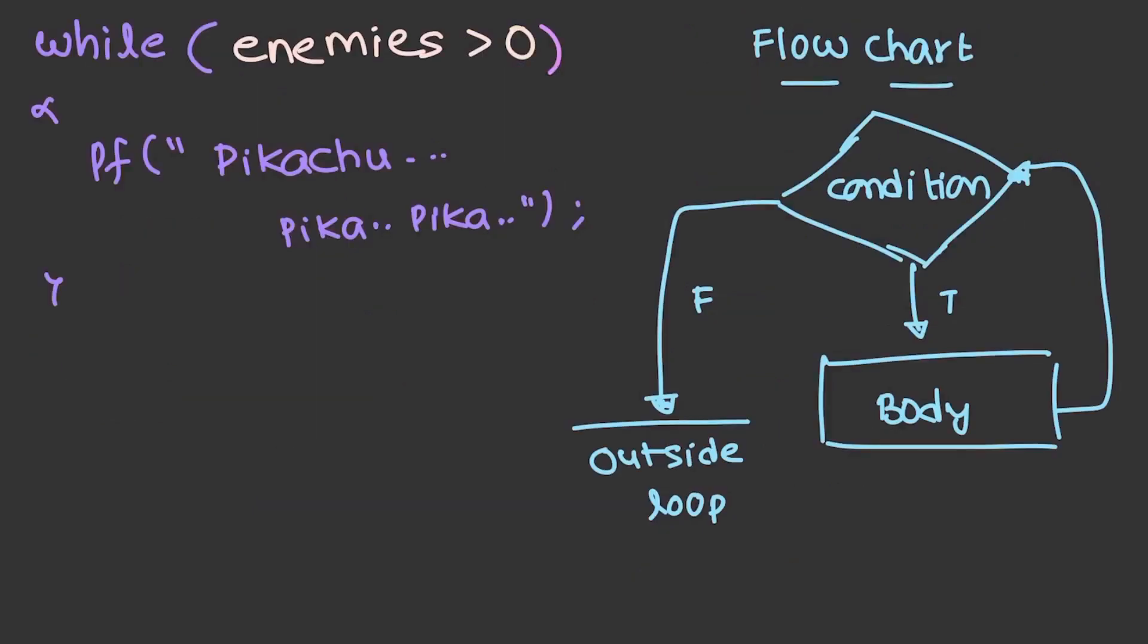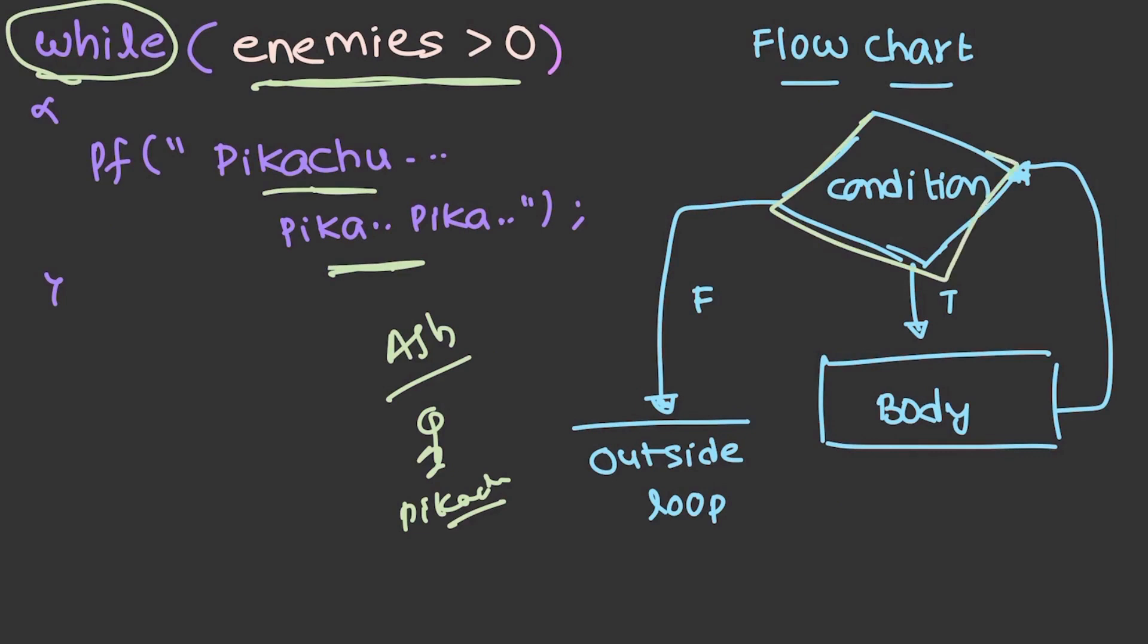Let's take a hypothetical situation where Ash is fighting enemies with the help of his Pikachu. While enemies are greater than 0, Pikachu is fighting. We have used a while loop here. While loop is very simple - if the condition is true, it enters the body. If the condition is false, it just comes outside of the loop.